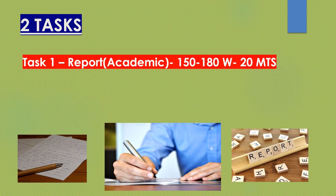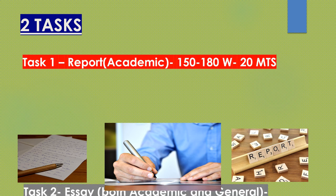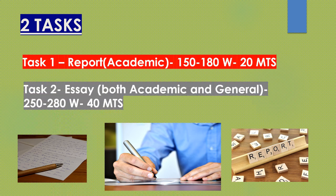There are two tasks in writing. Task 1 is report writing for academic, 150 to 180 words in 20 minutes, and Task 2 is essay — both academic and general — 250 to 280 words in 40 minutes. In this video I'm going to share with you Task 1 report writing for academic.